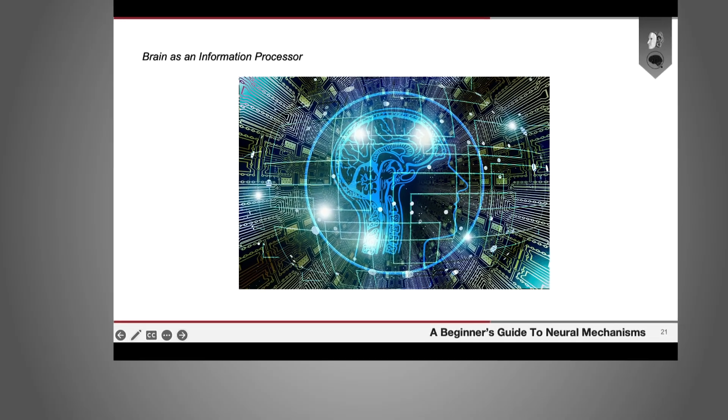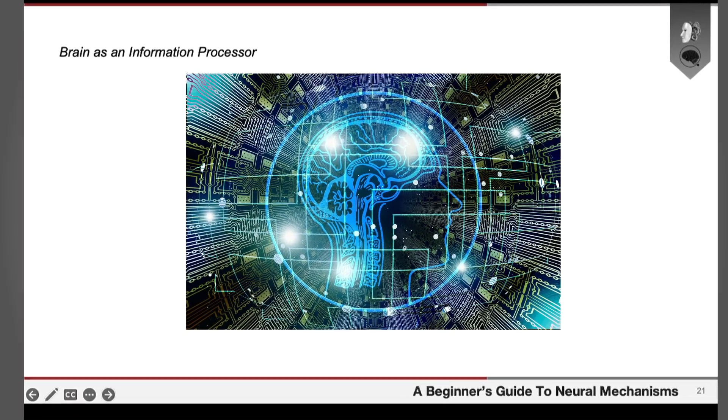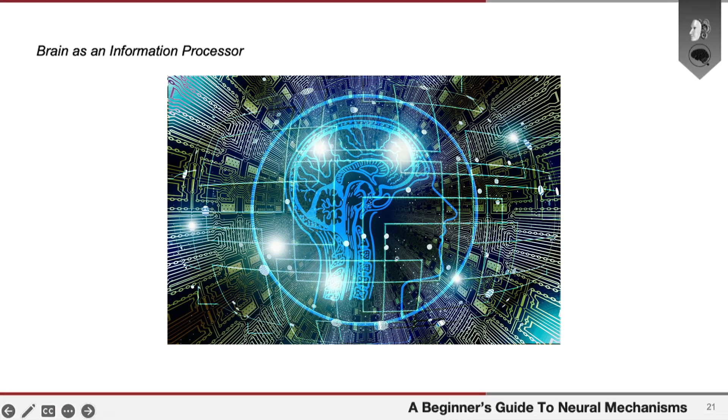So this hypothesis that the brain itself is an information processor is known as the computational theory of mind, and it's one of the central explanations for the functioning of the brain as the organ of thought.